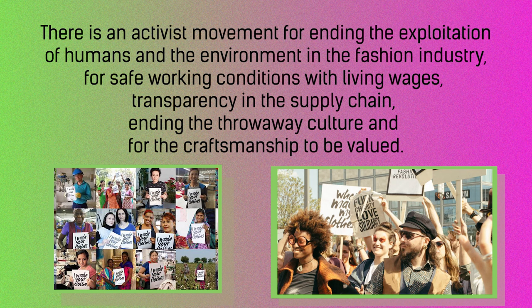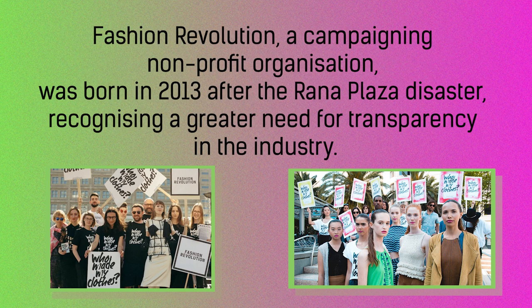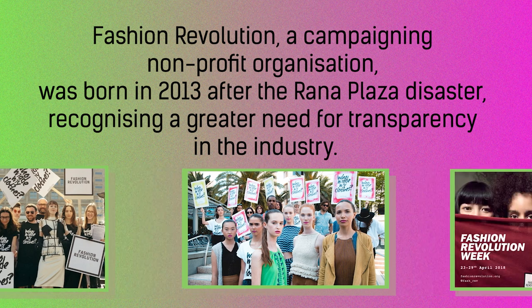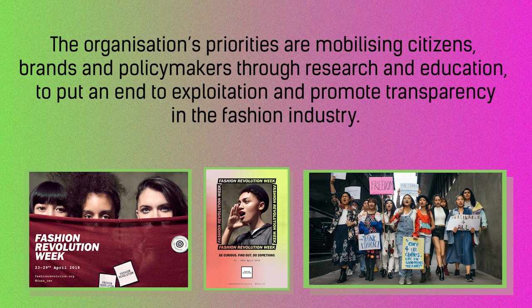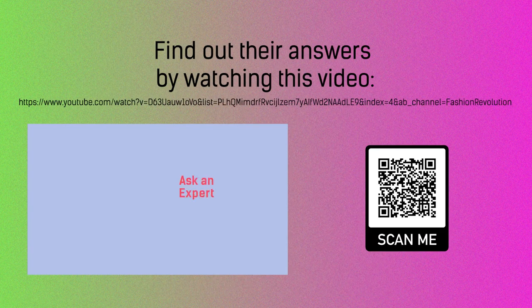There is an activist movement for ending the exploitation of humans and the environment in the fashion industry, for safe working conditions with living wages, transparency in the supply chain, ending the throwaway culture, and for craftsmanship to be valued. Fashion Revolution, a campaigning non-profit organization, was born in 2013 after the Rana Plaza disaster, recognizing a greater need for transparency in the industry. The organization's priorities are mobilizing citizens, brands, and policy makers through research and education, to put an end to exploitation and promote transparency in the fashion industry. Fashion Revolution would like to alter the policy around garment workers, and asked the people most impacted what they would change if they had the power to do so. Find out their answers by watching this video.